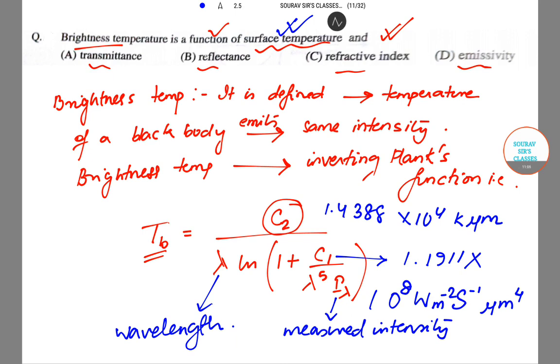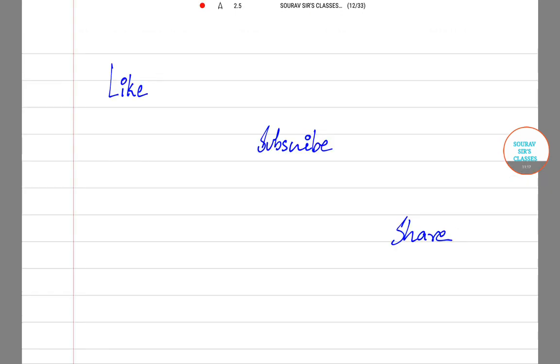Given this, we can clearly say that brightness temperature is a function of surface temperature and emissivity. Option D will be the correct answer. So with this we wind up today's tutorial. I hope this short tutorial on geology and geophysics where we solved some applications was helpful. If yes, don't forget to hit the like button, subscribe to our channel, share our videos, and thank you so much for watching.